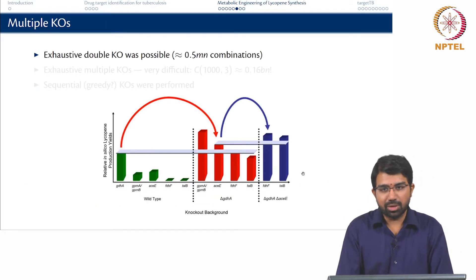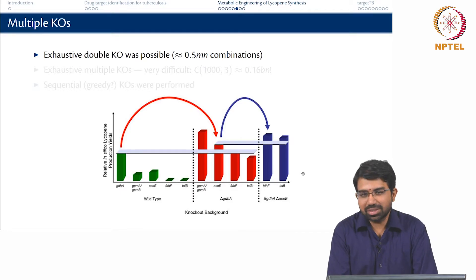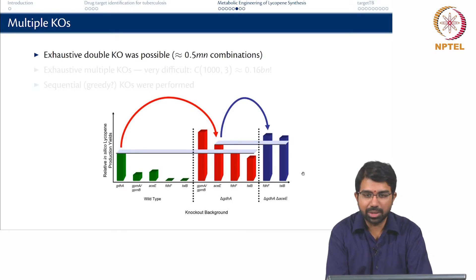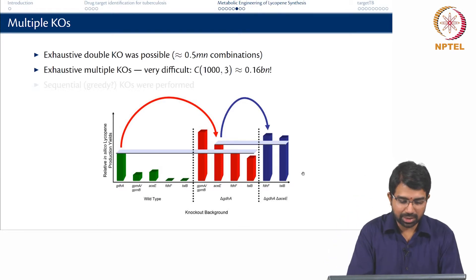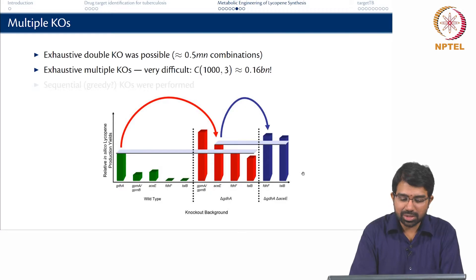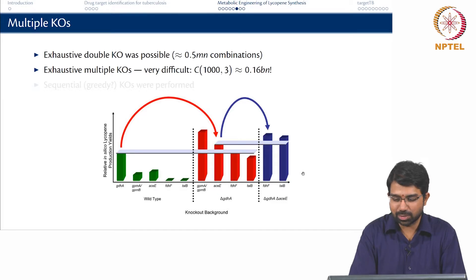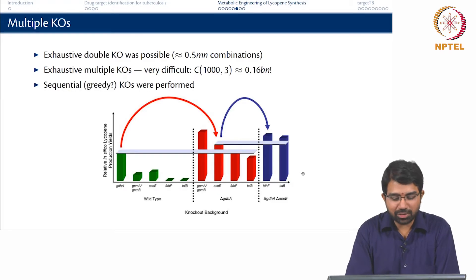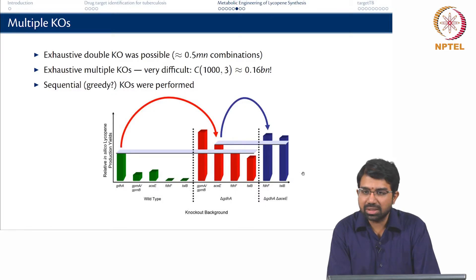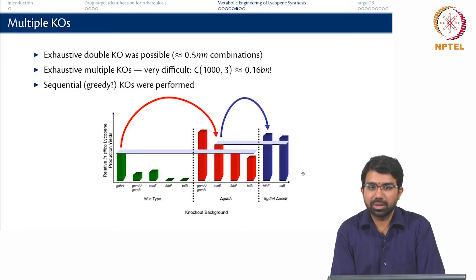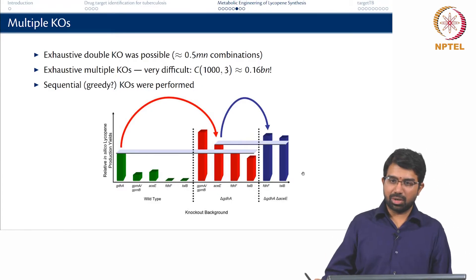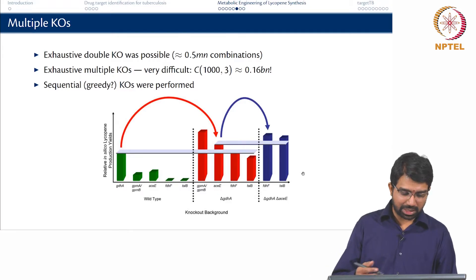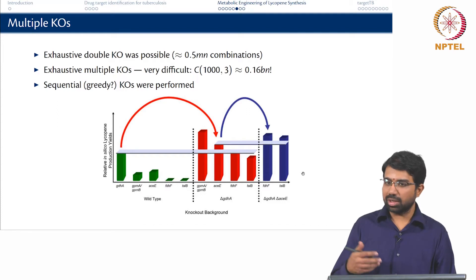They also tried exhaustive double knockouts, knocking out 2 genes at a time. With around 1000 genes, that is about half a million combinations, as discussed previously regarding synthetic lethals. Exhaustive triple knockouts are much harder — 1000 choose 3 is about 0.167 billion. So they used a greedy knockout approach: take the best double knockouts and knock out one more gene, which means solving only about 8000 LPs — not a big deal.